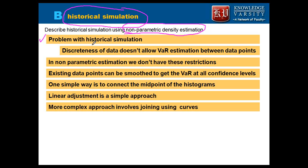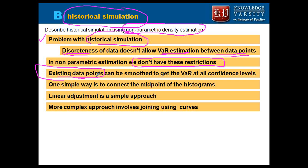The problem with historical simulation which we discussed is the discreteness - it did not allow you to compute values between any data points. We saw the example that if you have 100 data you can get 5% VaR but you cannot get 5.1% VaR because of the discreteness of this data. However, in case of non-parametric estimation we don't have this restriction - we are not restricted by the discrete data. So what we do is with the existing data points, which is actually a histogram, we can smoothen them. The smoothing can be linear - just adding the midpoints of the historical data - or it can be a curve also, to smooth and get the VaR at all confidence levels. A simple way is to connect the midpoint of the histogram - a linear adjustment.